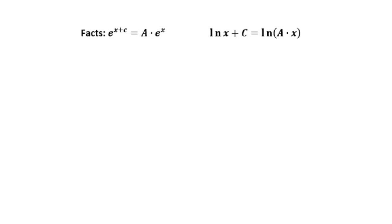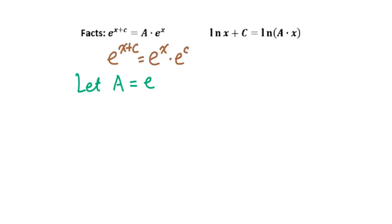Let's talk about some more facts. For e to the x plus c power, we can write it as a times e to the x, where both a and c are constants. We separate it as e to the x times e to the c. We let a equal e to the c, so e to the x plus c equals a times e to the x.